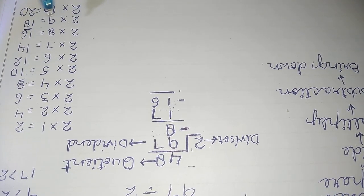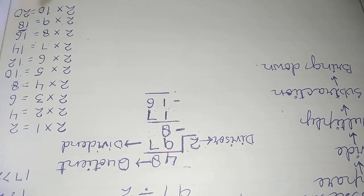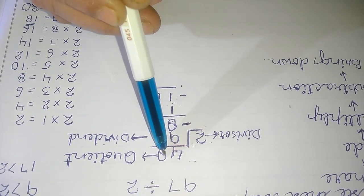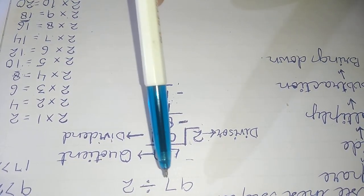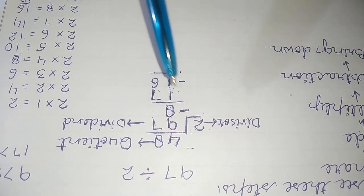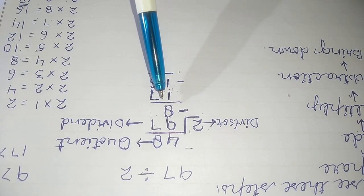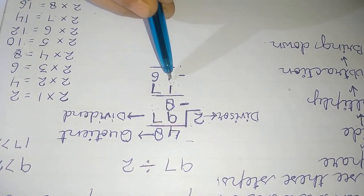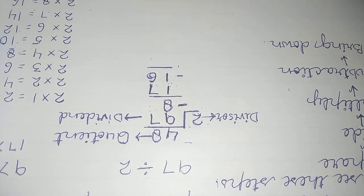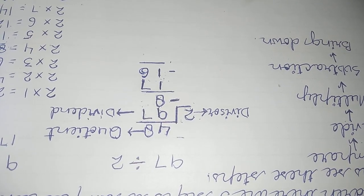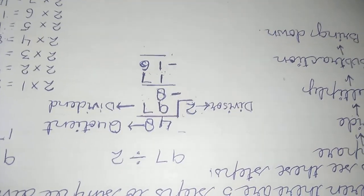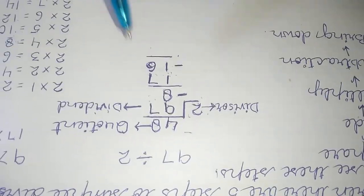The nearest product is 16, since 2 times 8 equals 16. So we write 8 above the 7. We write the number 16 under 17, and then subtract 16 from 17, which equals 1.